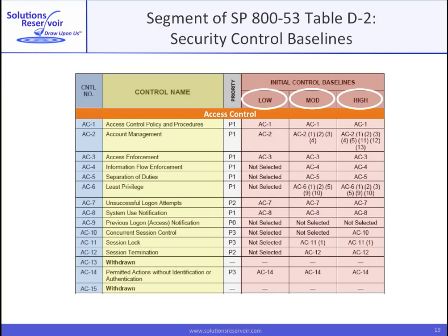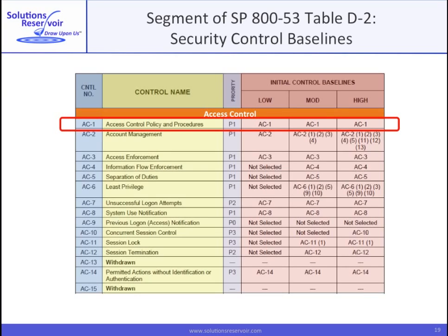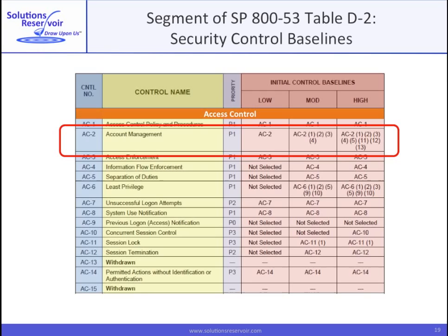Note the low, moderate, and high-impact categorizations per FIPS 199, and the priority for each control. Let's look at how to use this table, looking at AC-1 and AC-2. For AC-1, we see that regardless of whether our system were categorized as low, moderate, or high potential impact, we'd implement the same basic AC-1 control, which is defined in Appendix F. Let's contrast that with AC-2. If our system were low-impact, we'd only implement the basic AC-2 control. But if it were moderate or high, we'd implement a number of additional sub-controls, which are also defined in Appendix F. And that's how it goes for each control family.